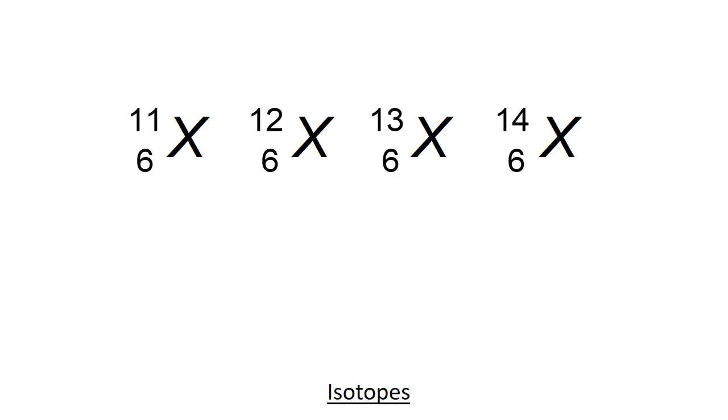So you may know this from chemistry. We have different atoms. All of these have atomic number six, so they're all carbon, but they have different mass numbers: 11, 12, 13, or 14. So these four nuclides are all different isotopes of carbon.